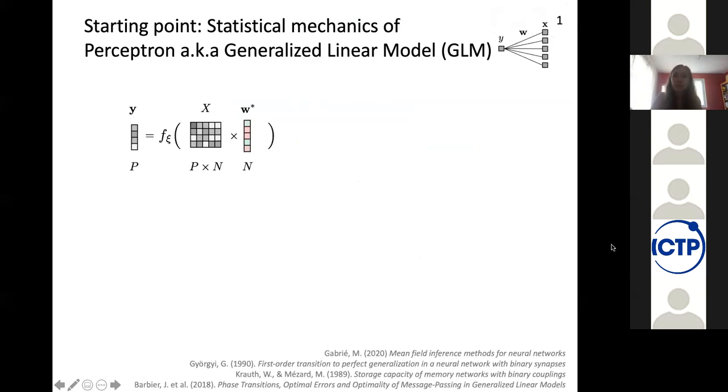So first of all, I would like to remind you about the statistical mechanics framework for looking at learning, as I'm sure it will come up multiple times during the conference. And I will do so by looking at the elementary model of the perceptron where we only have one output neuron. So I think there are three important points to have in mind when we speak about the statistical mechanics of learning.